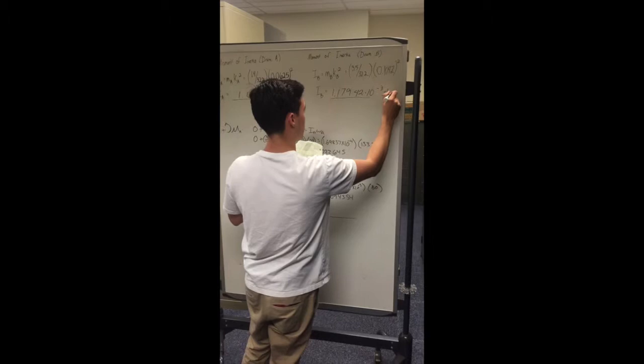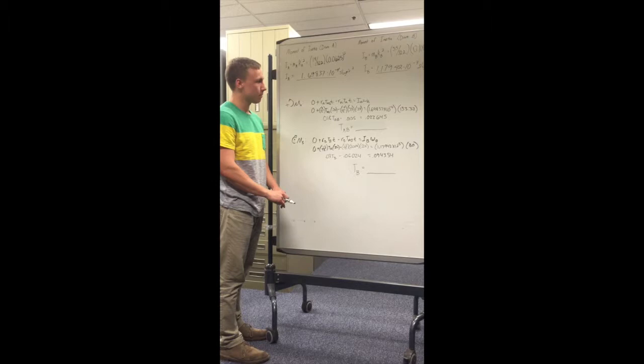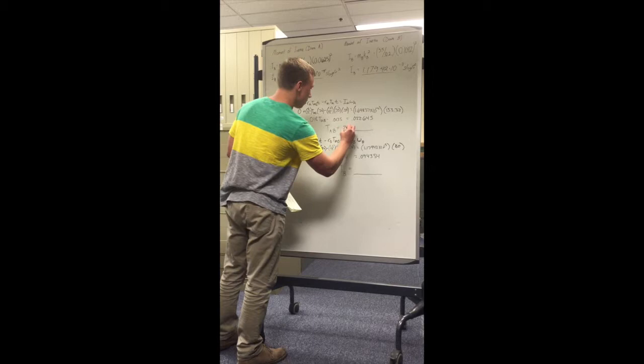Tension TAB. We need to sum the moments about A with a counterclockwise positive orientation. So, we do RA times TAB times T minus RA times TA times T is equal to the moment of inertia of A times the angular velocity of A. Now, plugging all these numbers in, we can see that tension AB is equal to 2.008 pounds.